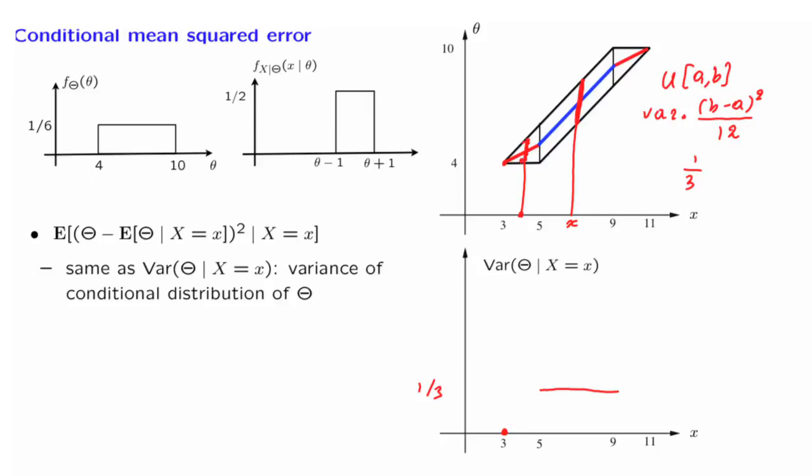What happens in between? As we increase x moving away from 3, the length of this interval increases linearly with x, which means the variance increases quadratically with x. So we have a quadratic that starts at zero and rises to this value.